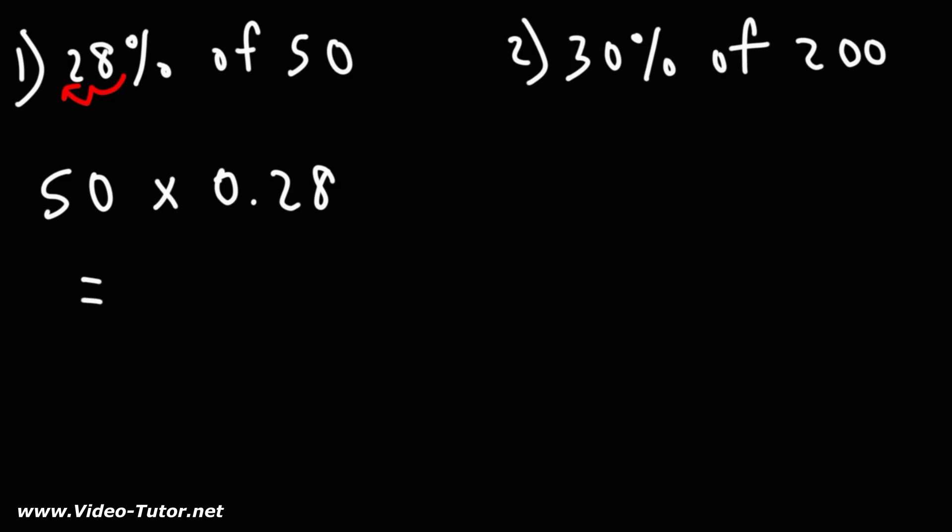So 50 times 0.28. Let's get a calculator to get that answer. And that's 178.57. So that's a rounded answer.